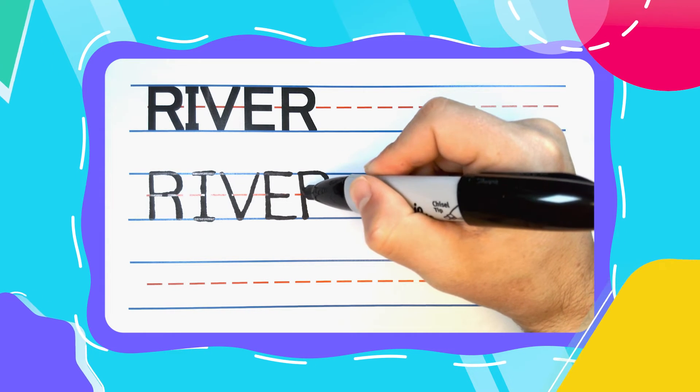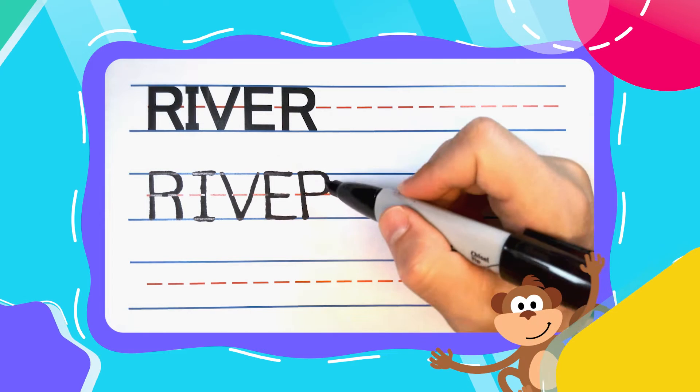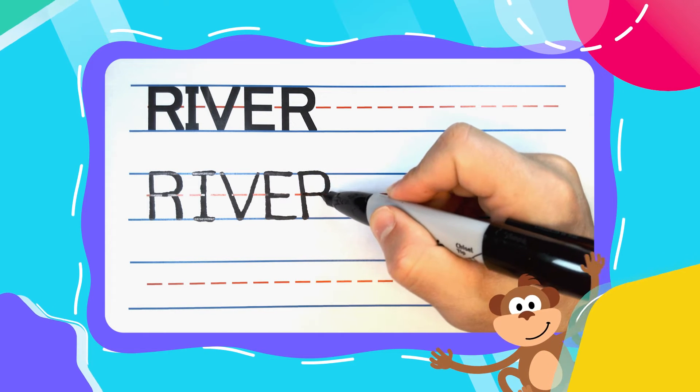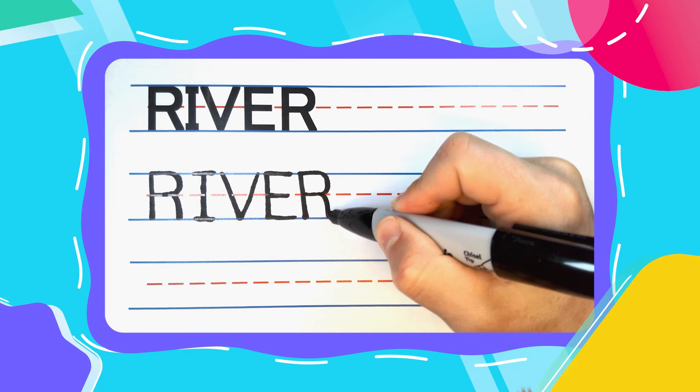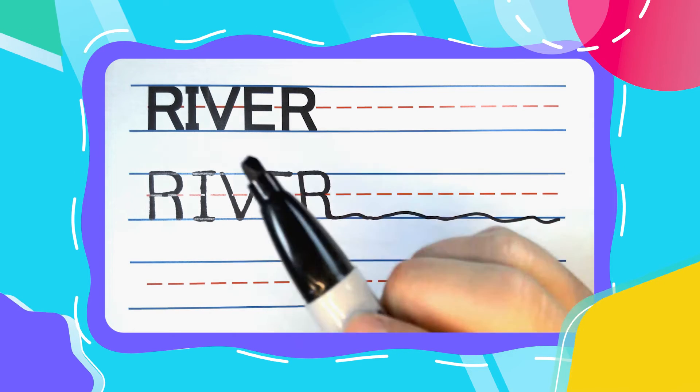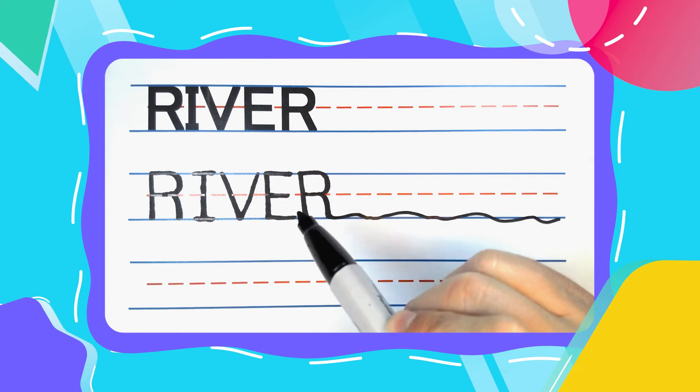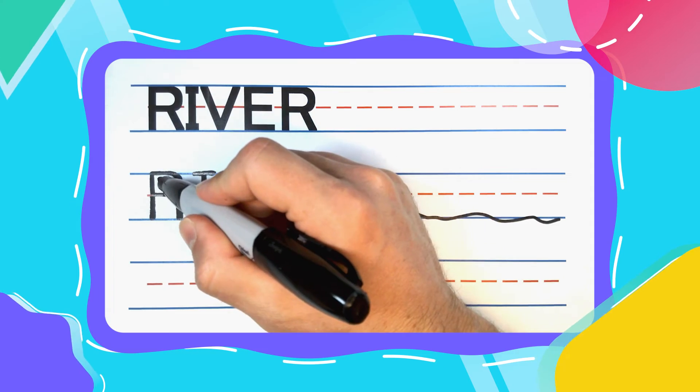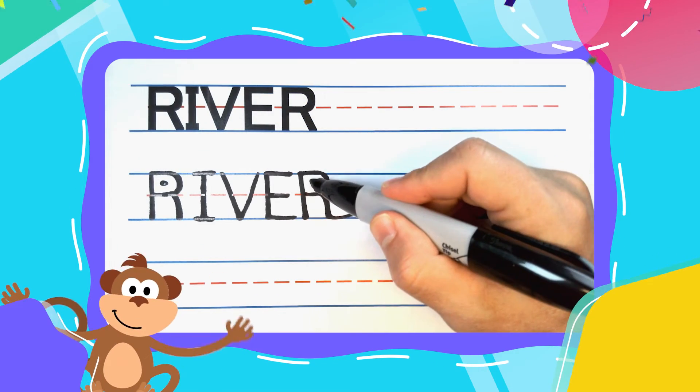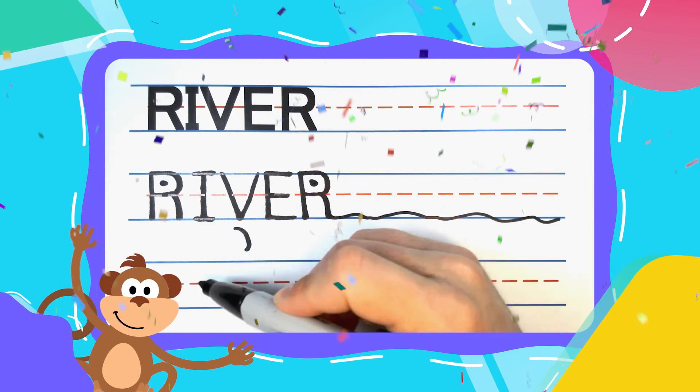Curve until you get to the middle and come back to the left. Turn that pesky P into a runnin' R that's gonna run right off the page. R-I-V-E-R spells River! Woohoo! Great job friends!